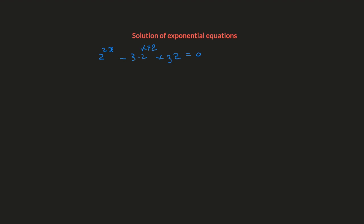First of all, we have to make some simplification in this equation. We use the exponent rule: 2 to the x+2 can be separated as 2 to the x times 2 to the square, plus 32 equals 0. Since this is 3 times 2 to the x times 2 squared, we can write 2 squared which is 4, times 3 equals 12, giving us negative 12 times 2 to the x plus 32.